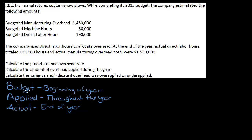At the beginning of the year, we're going to estimate our overhead and calculate a predetermined overhead rate based on that. Then we're going to use that predetermined overhead rate throughout the year to apply overhead to all of our jobs. At the end of the year, we're going to compare the applied overhead and the actual overhead to see how close we were.